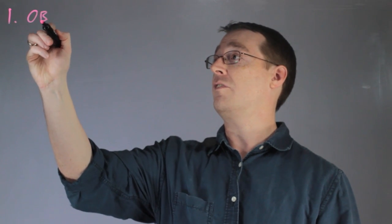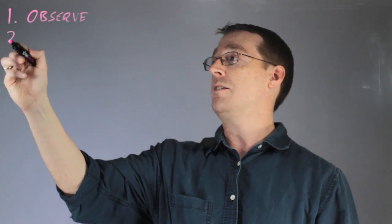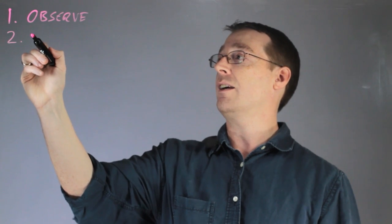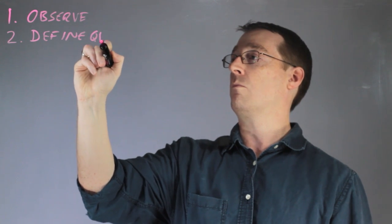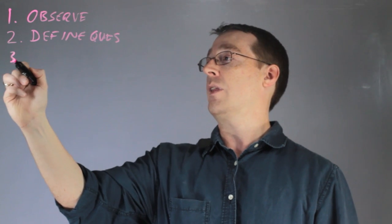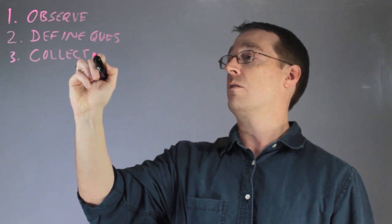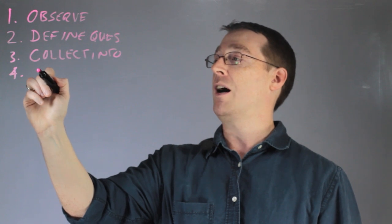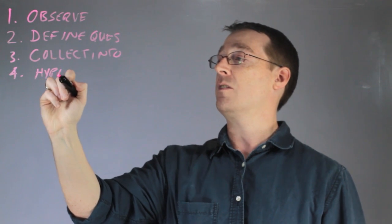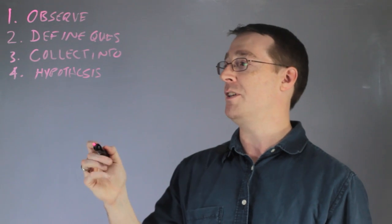The first step is to observe the phenomenon and next we define the question and collect information in order to generate a hypothesis in step four. That is a statement that we will be testing via experimentation.